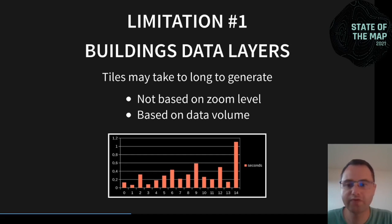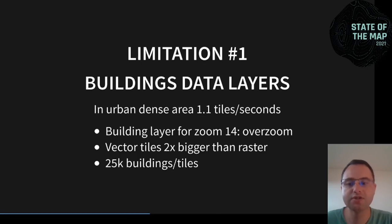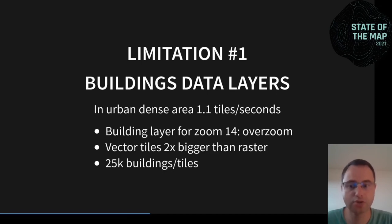We need to improve the generation time for zoom-14 tiles. The limitation is due to buildings. In dense areas there are a lot of buildings, and vector tiles are twice as large as raster tiles, so there are even more buildings in vector tiles. In the Paris area, there are around 14,000 buildings in a single tile — that's an average, and many tiles in the area can have more.